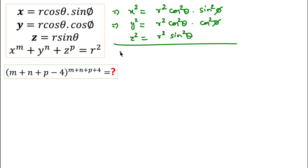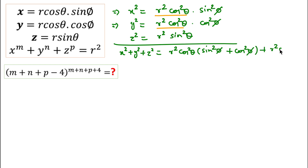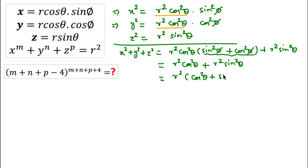If we add these three, x square plus y square plus z square equals — taking r square cos square theta common from the first two terms, we get r square cos square theta into (sin square phi plus cos square phi), plus r square sin square theta. By the trigonometric identity, sin square phi plus cos square phi equals one, so this becomes r square cos square theta plus r square sin square theta, which equals r square (cos square theta plus sin square theta), which is also one.